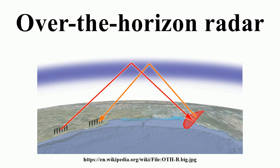In general it is impractical to build radar systems with line-of-sight ranges beyond a few hundred kilometers. OTH radars use various techniques to see beyond that limit. Two techniques are most commonly used: short-wave systems that reflect their signals off the ionosphere for very long-range detection, and surface-wave systems which use low-frequency radio waves that, due to diffraction, follow the curvature of the Earth to reach beyond the horizon.